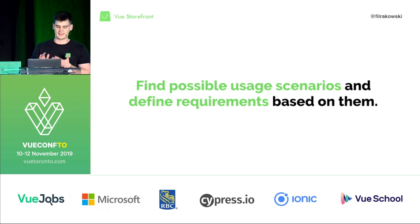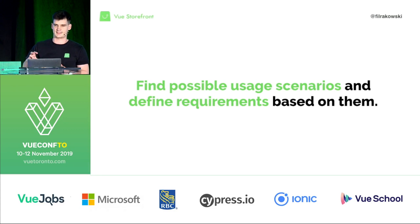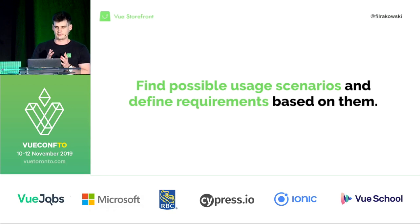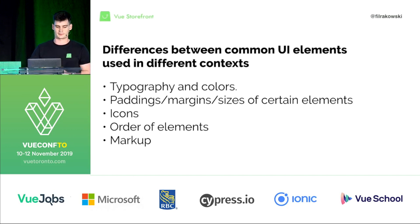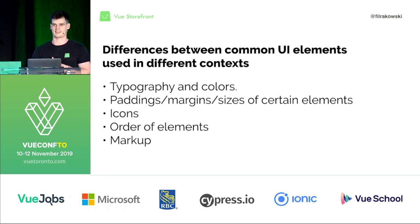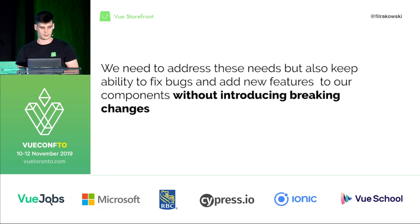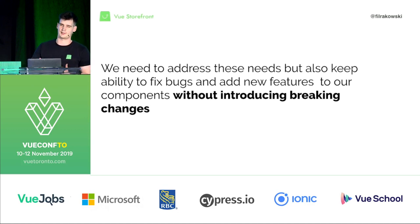This is very important because it implies that we need to favor customization capabilities over other factors. We took some designs, extracted certain components — banners, product tiles, things like that — and listed the differences. It turns out the differences are usually typography and colors, paddings, margins, sizes of certain elements, icons, sometimes the order of elements inside the component, and in very extreme cases also the markup itself, because we can't always adjust markup with only CSS.